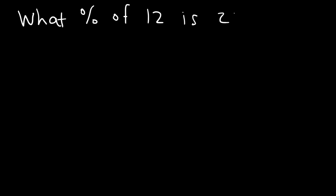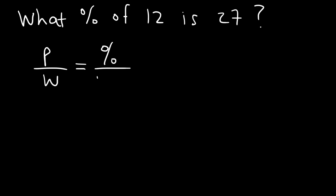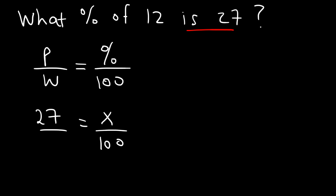Here's another similar example: What percent of 12 is 27? So we're going to use the same equation: part divided by whole is equal to percent divided by 100. We're going to make the percent X. The number associated with 'is' is the part, so 27 is the part. The number associated with 'of' is the whole, so 12 is the whole.